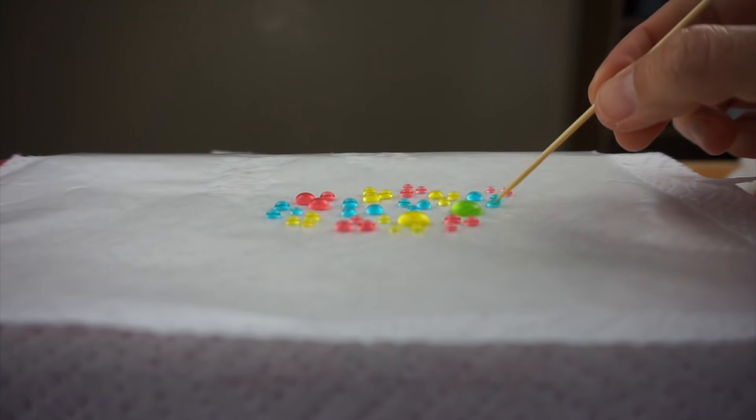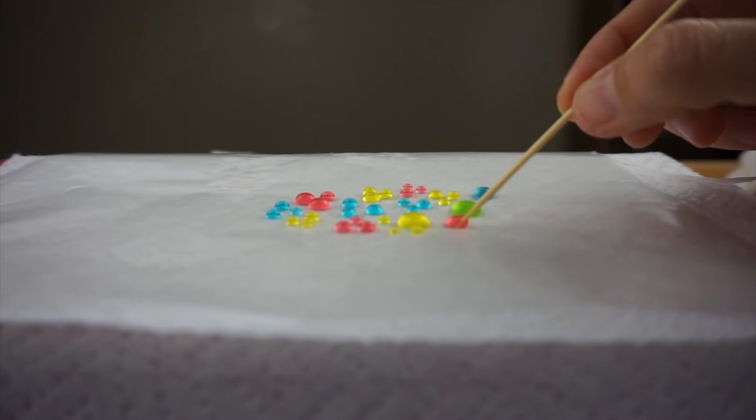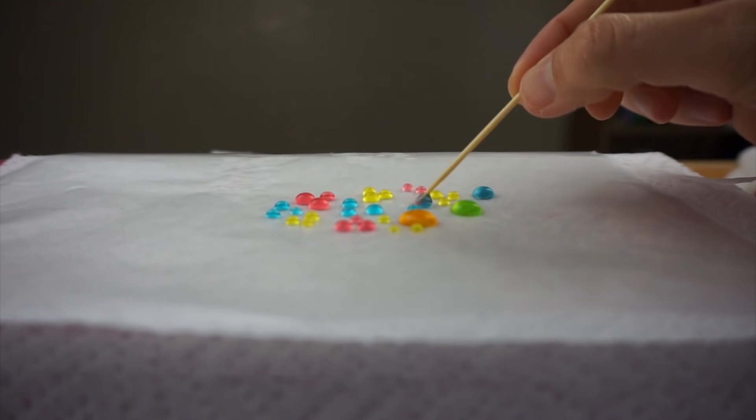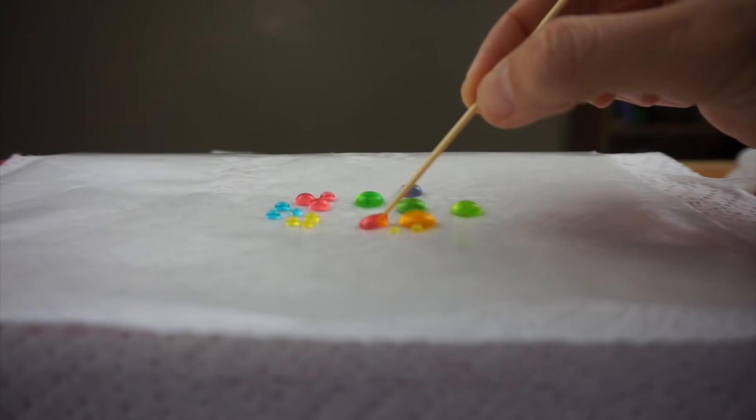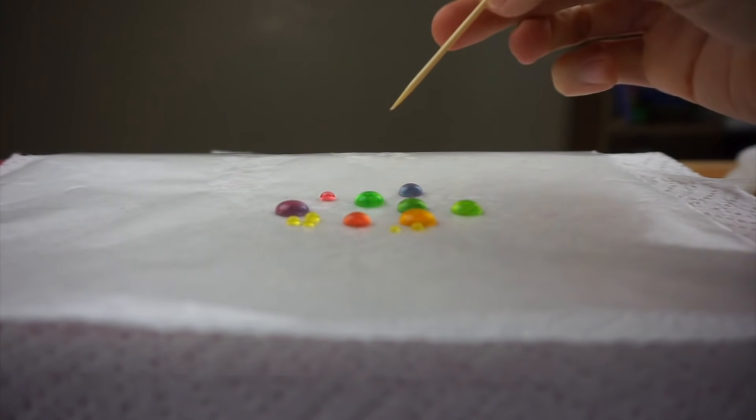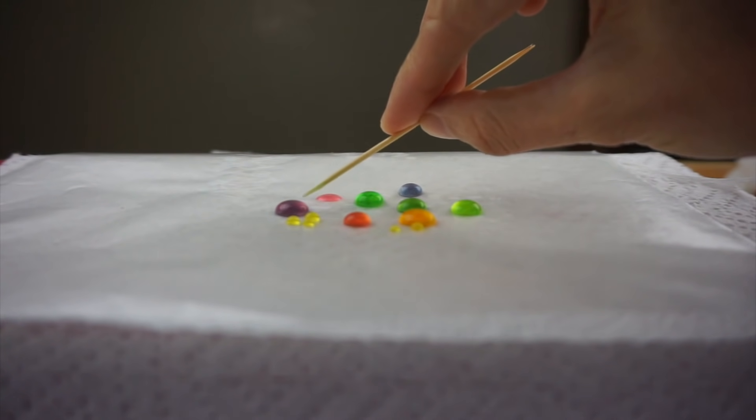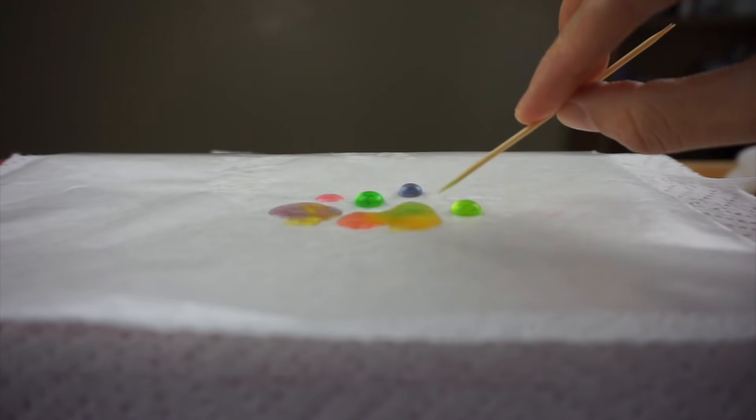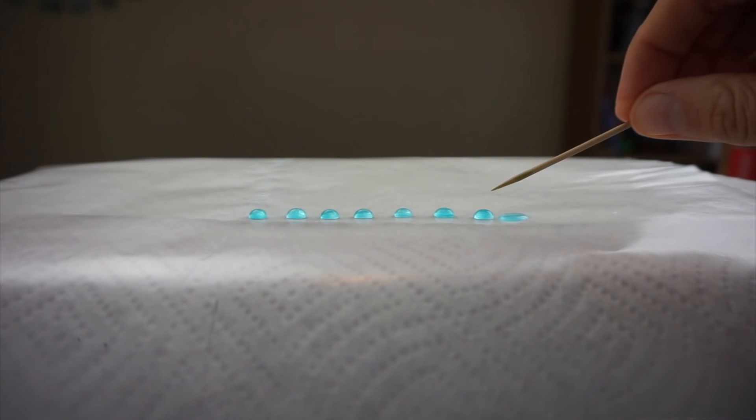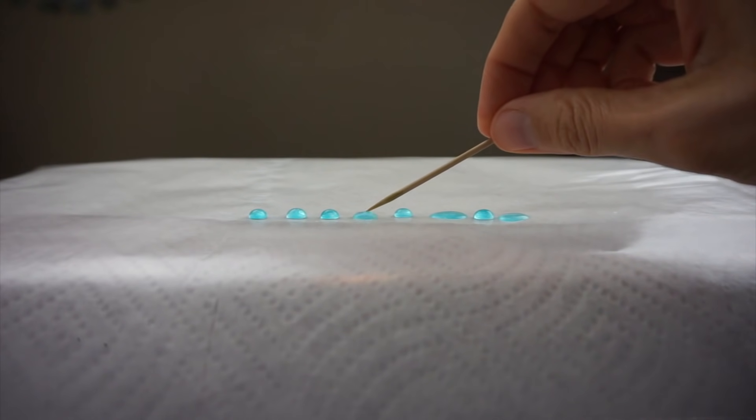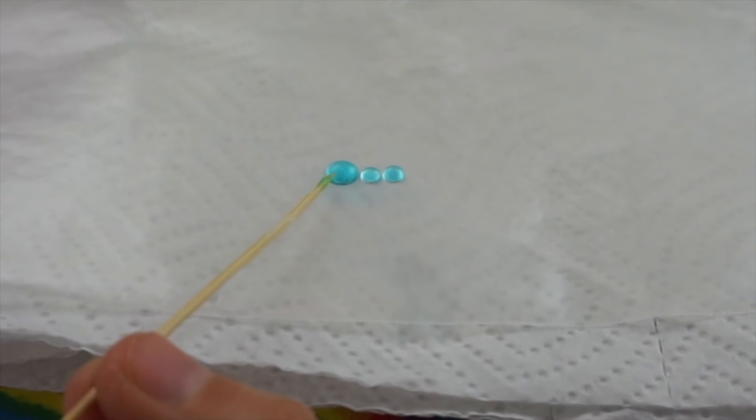You can see that when I poke these drops of water with a toothpick, they don't lose their surface tension. I can push them around the waxed paper. I can combine smaller drops into bigger drops and mix colors. But the other end of my toothpick has just a little bit of soap on it. And when I touch them with that end of the toothpick, they flatten out instantly. Just a tiny bit of soap can make a big difference.